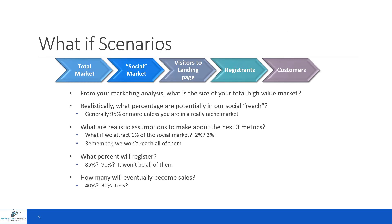In a what-if scenario, we always have the total market — what I call the social market or the available market. Then there are several behaviors that are our key KPIs. You've already established them in the performance funnels. We want to ask: what is realistically going to happen under different assumptions? For instance, what happens if our marketing program brings visitors to the landing page at only 1%, 1.5%, or 2% of the social market, and what happens if we vary the registration and how many sales actually occur?